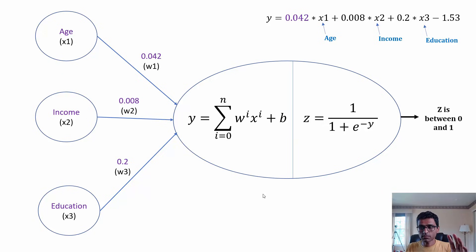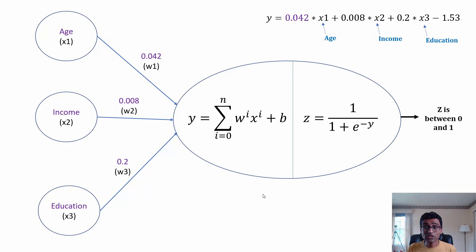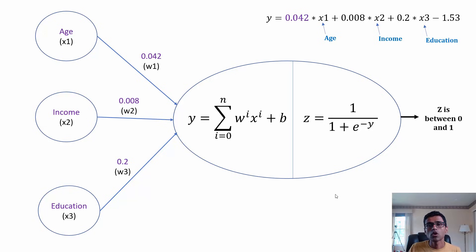We looked at our insurance dataset example in previous videos. There we built a single neuron neural network for a classification problem based on age, income, and education to predict if a person will buy insurance or not. We saw that having a sigmoid function helps reduce output to a range of 0 to 1, so you can make a classification decision. The sigmoid function decides whether your neuron is firing or not.